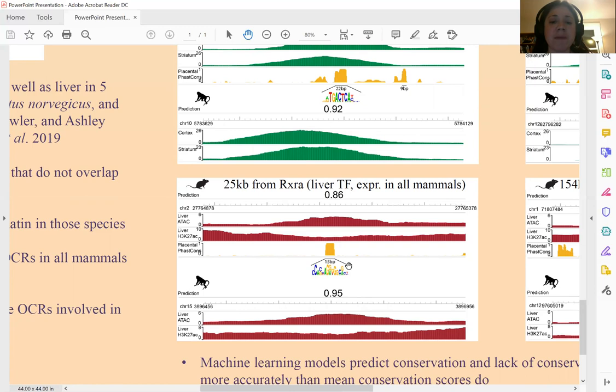We think that our model was able to get this right because when interpreting our model, we found that one of the things our liver model learned was the motif for CTCF. So our model was able to automatically identify that this short region was important for open chromatin, even though the conservation overall was low and thus using average conservation scores would not have made such an accurate prediction.